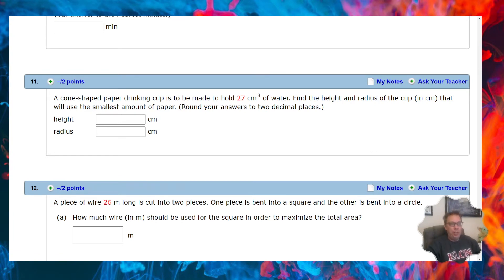Suppose I have a cone-shaped paper drinking cup to hold 27 cubic centimeters of water. I want to find the height and radius of the cup - in other words, kind of the shape of the cup, how tall is it, how wide is it - that uses the smallest amount of paper.